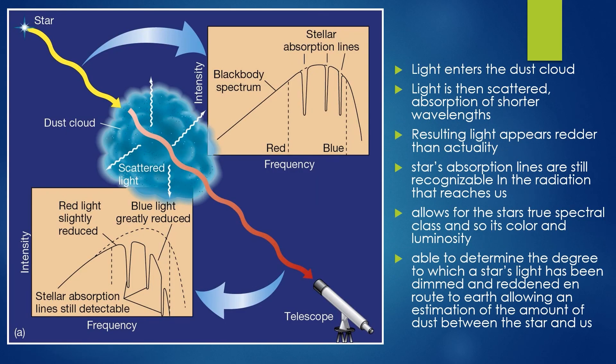How interstellar reddening works: light from a far away star will interact with some interstellar dust. The dust itself will absorb the light that is of a smaller wavelength or more energetic, with the resulting light released being redder and dimmer than when it entered. The star's absorption lines are still recognizable in the radiation that reaches us, which allows scientists to see the star's true spectral class and its color and luminosity. From this, astronomers can determine the degree to which a star's light has been dimmed and reddened en route to Earth, allowing an estimation of the amount of dust between the star and us.